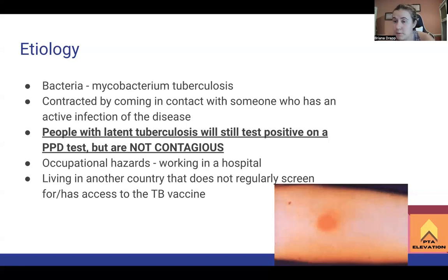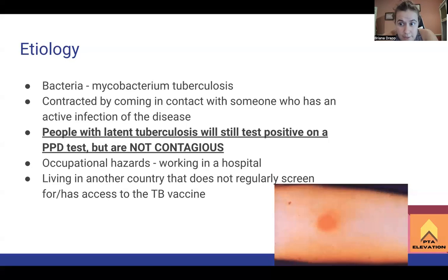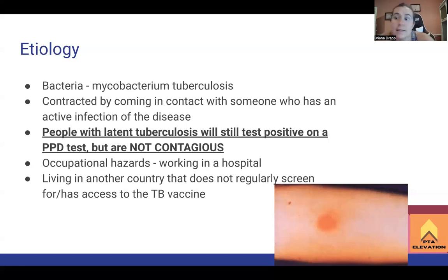People who have latent tuberculosis are totally fine. You don't need airborne precautions, you don't need to wear an N95 mask or anything like that. They'll pop positive on a PPD, but as long as they're not actively coughing up blood and you can tell they're actively diseased, they're good to go. The boards might ask about this: for someone with latent tuberculosis, what precautions do you take? Just wash your hands - that's about it.